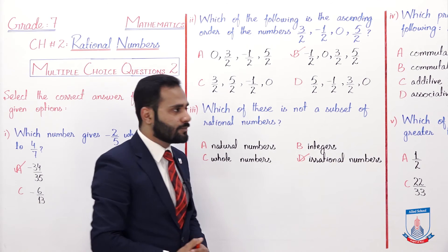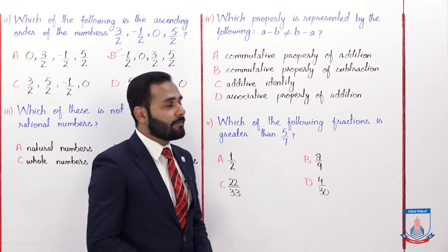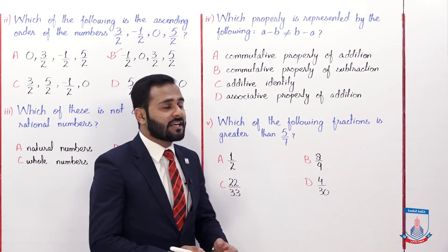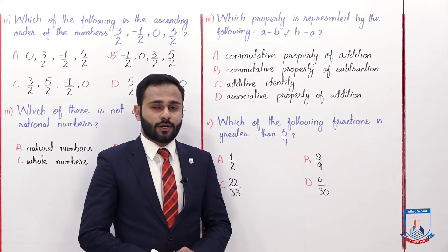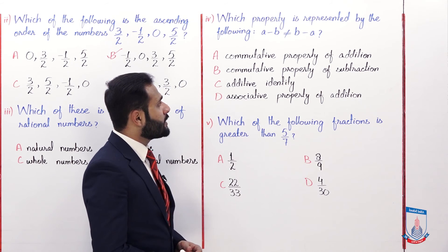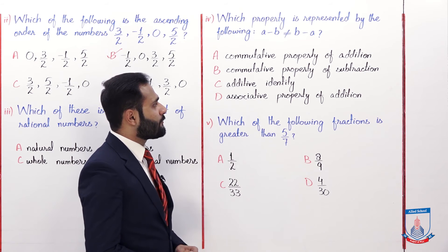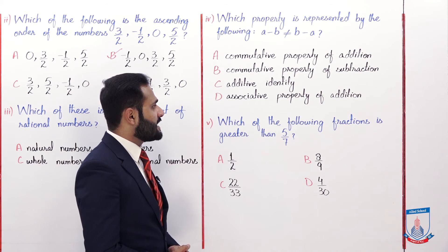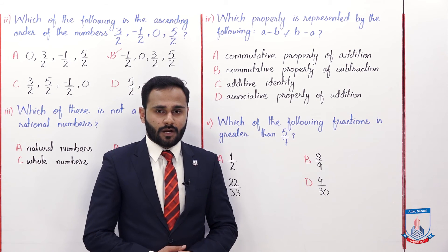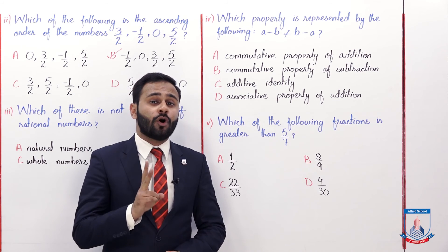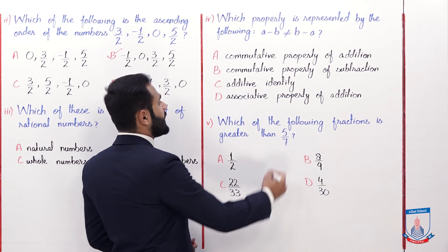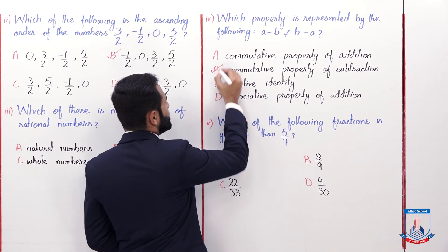Now move to the next MCQ. MCQ number 4: Which property is represented by A minus B is not equal to B minus A? Kaun si property is ko represent karti hai? Options: A) Commutative property of addition, B) Commutative property of subtraction, C) Additive identity, D) Associative property of addition. Yahan par hum do numbers ko subtract kar rahe hain, that means commutative property of subtraction yeh correct answer hai. So option B is correct.